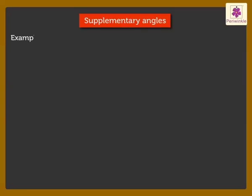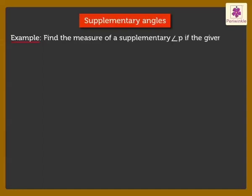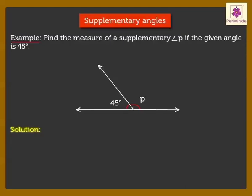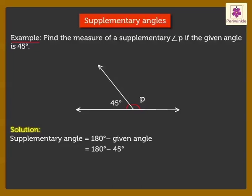Now, let's solve an example. Find the measure of supplementary angle P if the given angle is 45 degrees. We use the formula: Supplementary angle is equal to 180 degrees minus the given angle. 180 degrees minus 45 degrees is equal to 135 degrees.